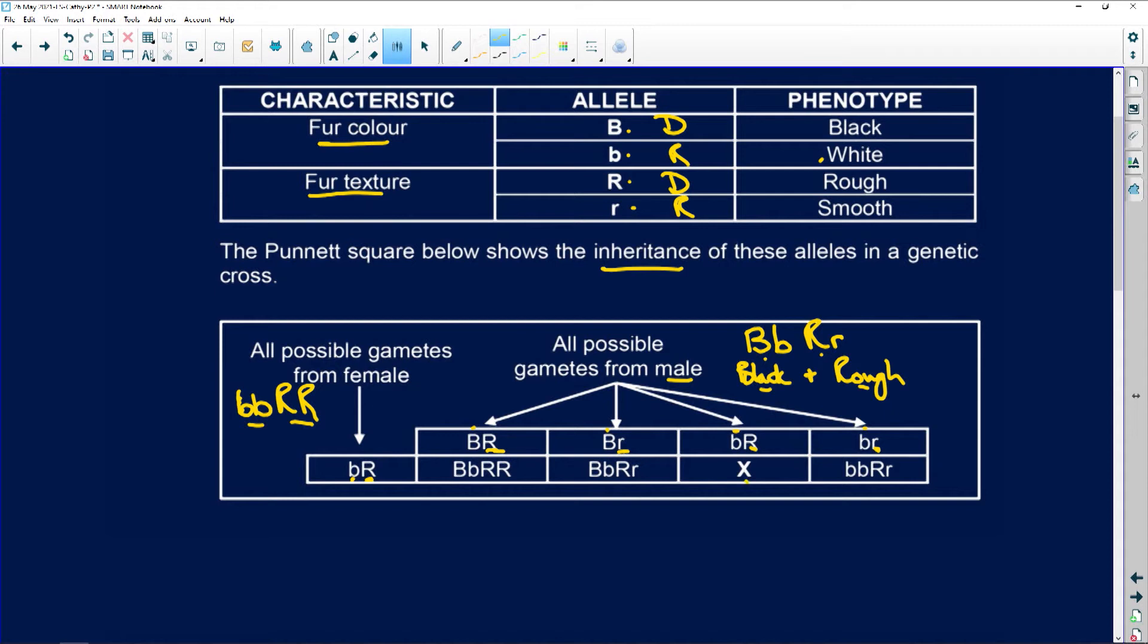Now, what would X be? So X would be lowercase b and lowercase b and capital R and capital R, which means that the X is going to be the same as the female, white with a rough coat. White, homozygous white and homozygous rough coat.